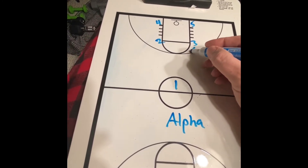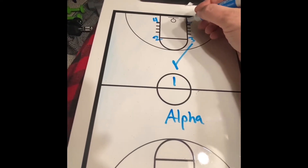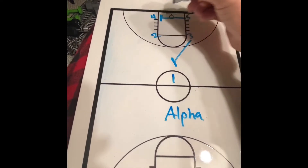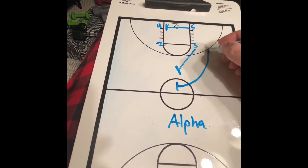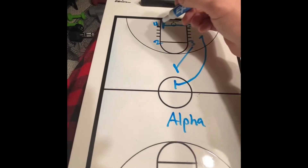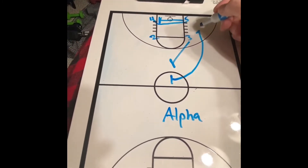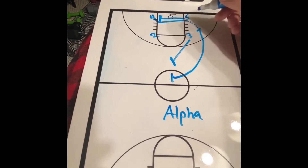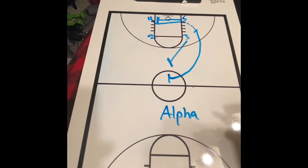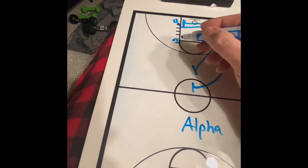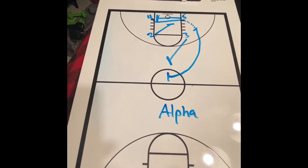That will trigger the number three man to come set a screen, and trigger the number five man to go set a screen. The point guard dribbles to his right and makes a jump stop while the four is coming over to the block to receive a pass. Once he receives that pass, he turns and shoots. Number two will crash the board for a rebound. That is Play Alpha.